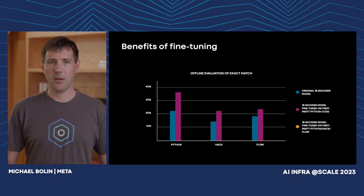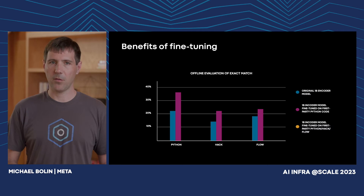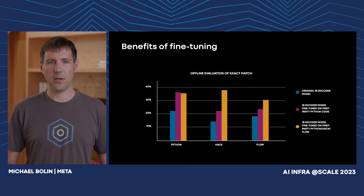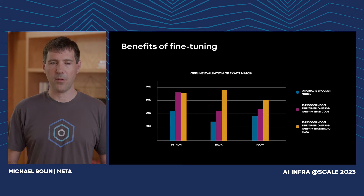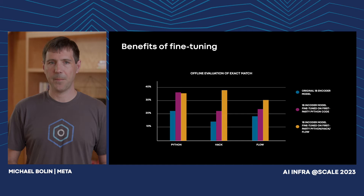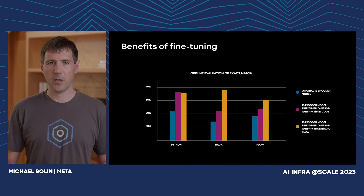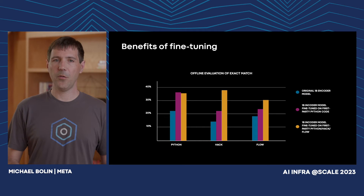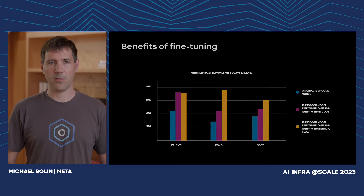Finally, we did an additional fine-tuning to include first-party Hack and Flow code and re-ran the analysis once more. As expected, this further improved the model's ability to infill exact matches for Hack and Flow, though the score for Python had a small decrease of less than 1%. As you can see, being able to fine-tune on first-party code is a significant advantage of building our own code completion service. In addition to experimenting with the training data, we also made some changes to the model architecture itself.